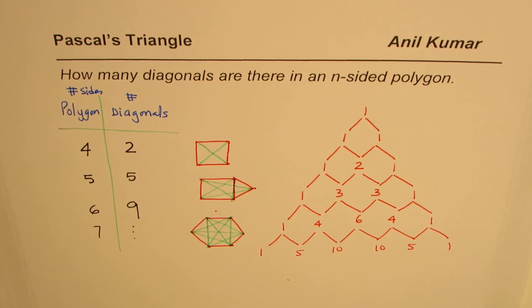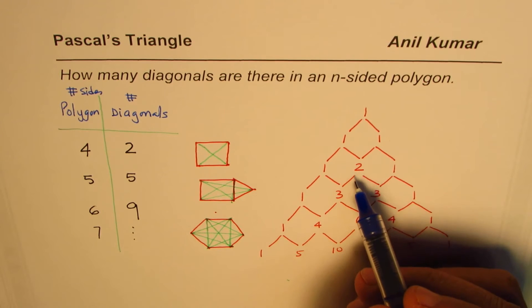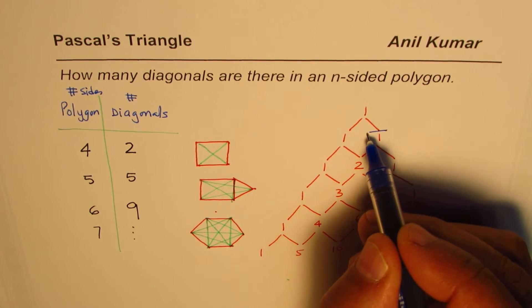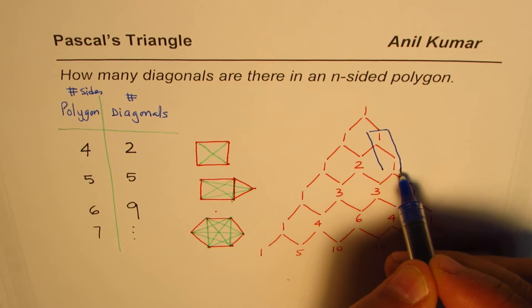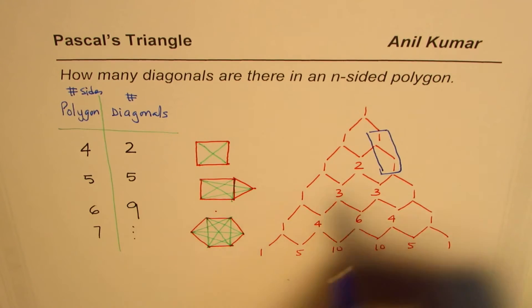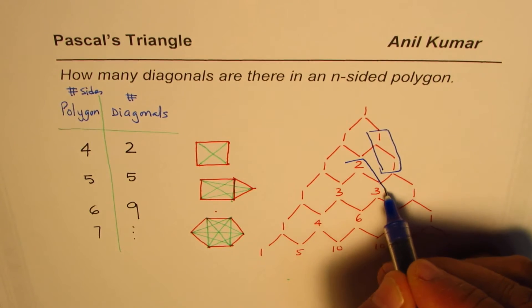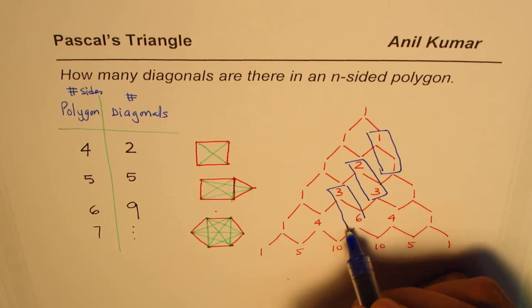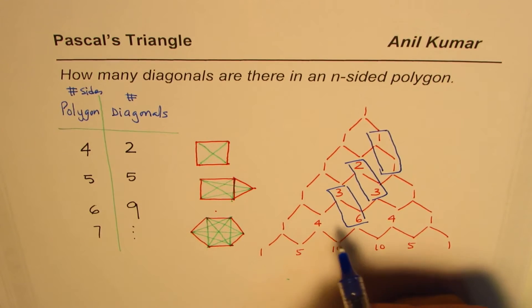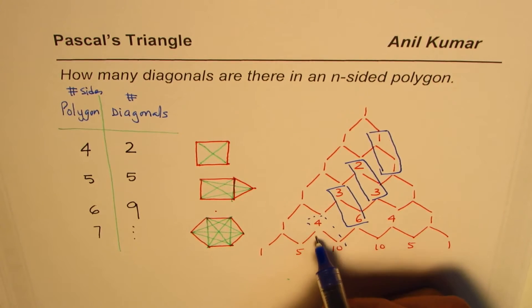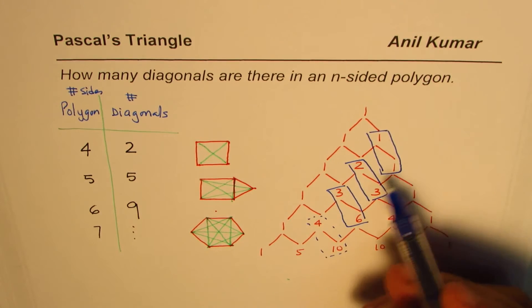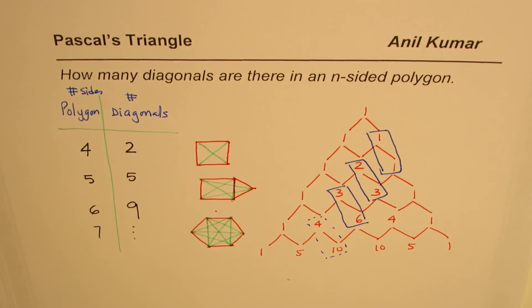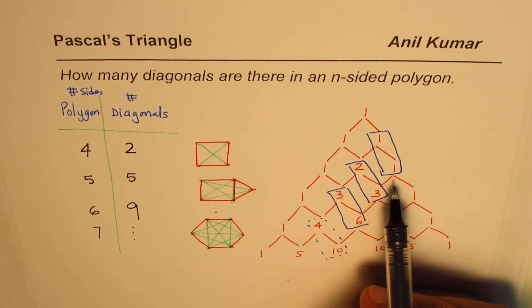Now let's see how we get our numbers 2, 5, and 9 from Pascal's triangle. We can get 2 by combining the two entries above it. We get 5 by combining 2 and 3. We get 9 by combining 3 and 6. Similarly, for a seven-sided polygon the result should be 4 plus 10, which is 14. This trend supports our table.